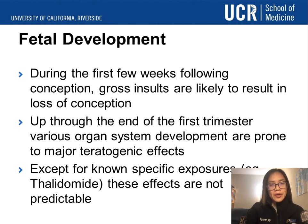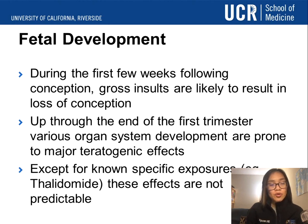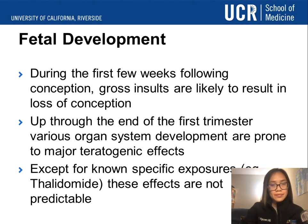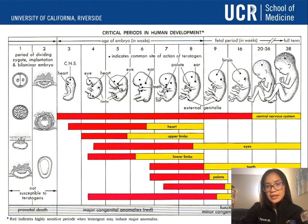Before we talk about that, we need a basic understanding of what fetal development is. During the first few weeks following conception, gross insults to the fetus are more likely to result in loss of conception. Up until the end of the first trimester, various organ systems are prone to major teratogenic effects. We know certain exposures such as medications like thalidomide, but a lot of these effects are not predictable. We can see the critical period as the fetus develops, and this is a good chart which shows the general development of certain anatomies.